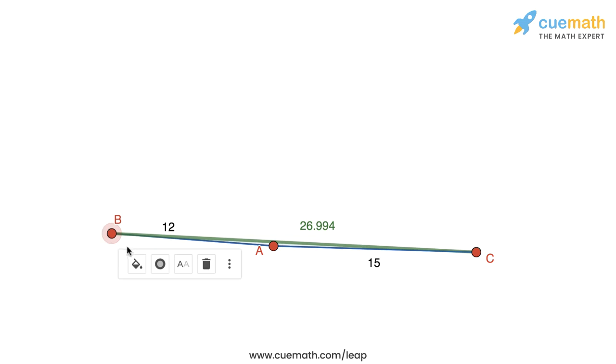It will continue to increase till angle A is almost 180 degrees like this. In this situation, BC is almost equal to 27 centimeters, but it must still be slightly less than 27 centimeters since it must be smaller than the sum of AB and AC, which is 12 plus 15.